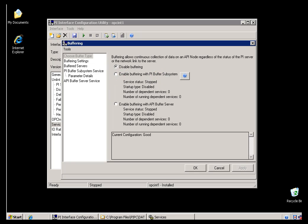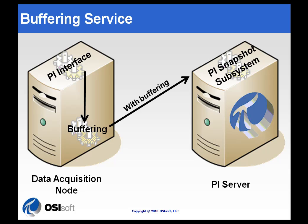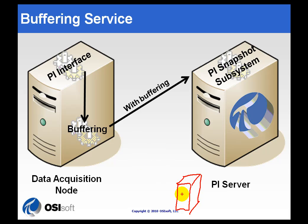Where you have multiple PI Servers, the PI Buffer Subsystem ends up doing things that are much better for that situation. Let's say we've got buffering in place, and in addition to the first server we've got a second PI Server that will receive a copy of the data. We would call this N-Way Buffering — the buffering goes to the first server and also to the second.